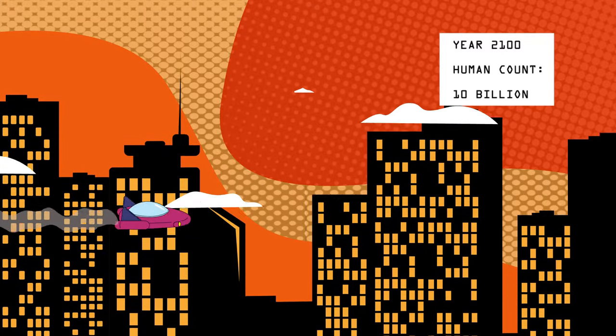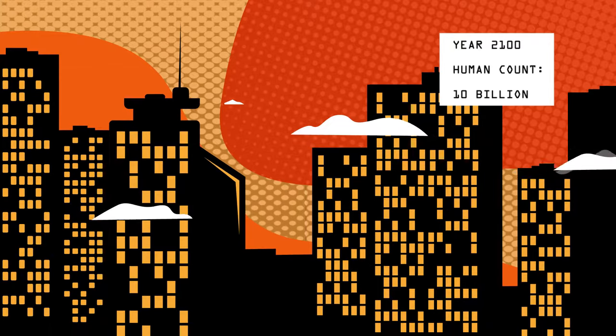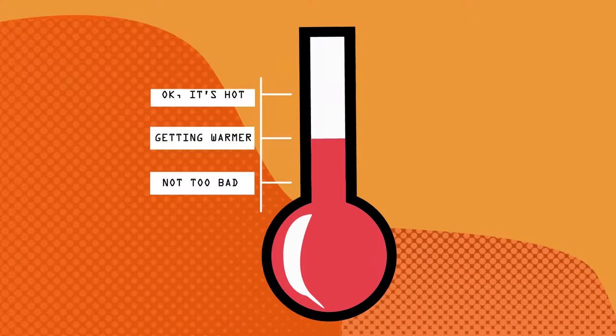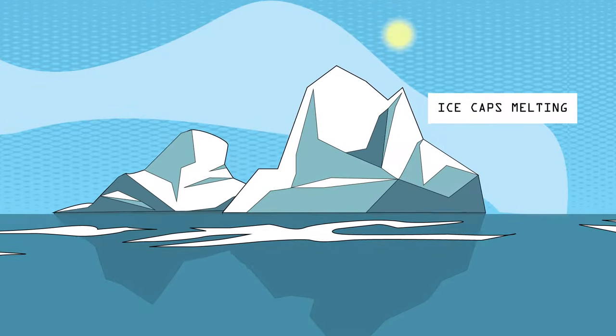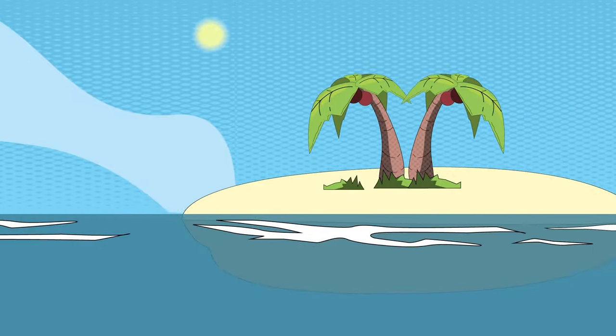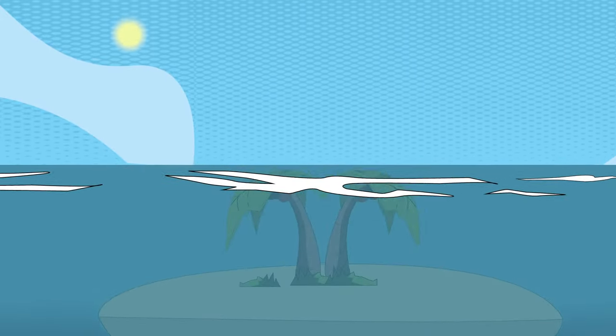The year is 2100. Human population has reached 10 billion. As temperature rises and ice caps continue to melt, rising sea levels have caused huge swathes of land to be permanently underwater.